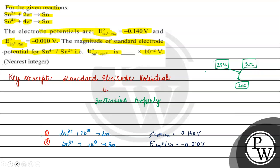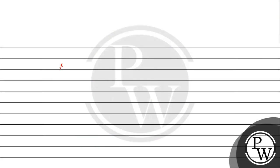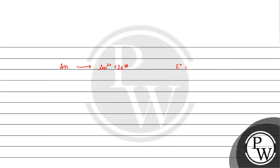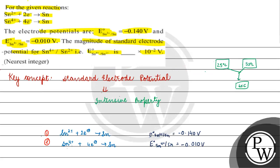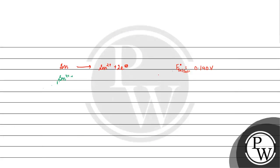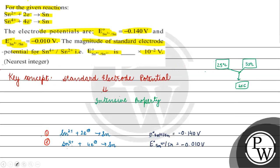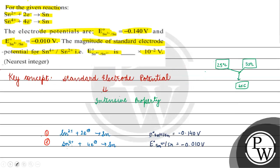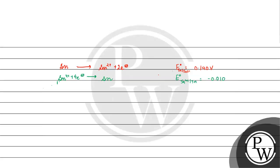We will reverse the first reaction. After reversing, we get Sn²⁺ + 2 electrons, with E° becoming the oxidation potential — the additive inverse, so +0.140 V. The second reaction remains: Sn⁴⁺ + 4 electrons gives Sn, with E° = -0.010 V.